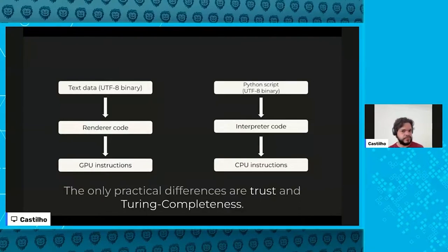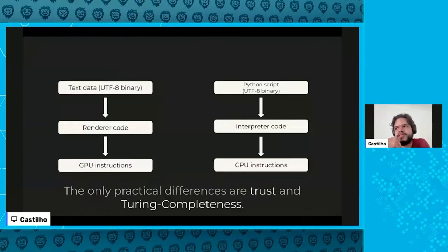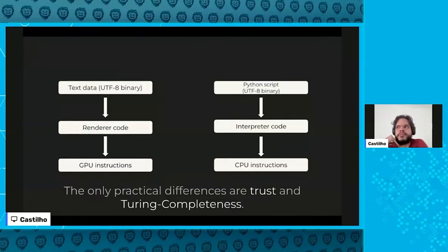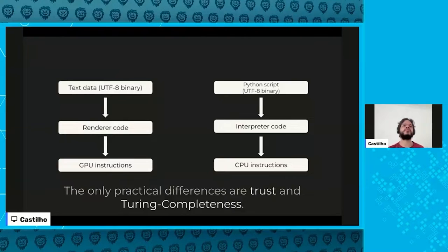The renderer code is not meant to be Turing complete — it's not meant to do anything a computer can do. When you run a Python script you expect arbitrary computation, but the renderer's only job is making text show up on your device. But how do you guarantee that? Most of the time, you don't.